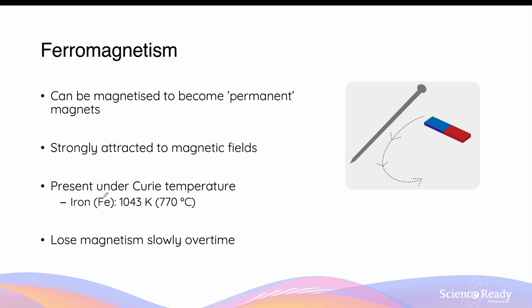Ferromagnetism in any material can only occur below a certain temperature known as the Curie temperature, which varies depending on the material. For iron, a very common example, this is 1043 Kelvin, or roughly 770 degrees Celsius.